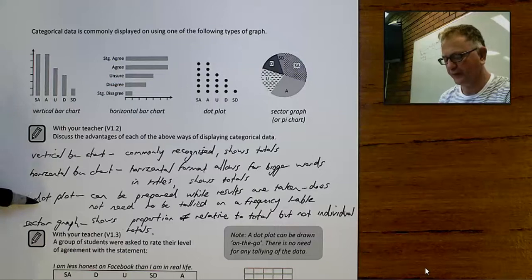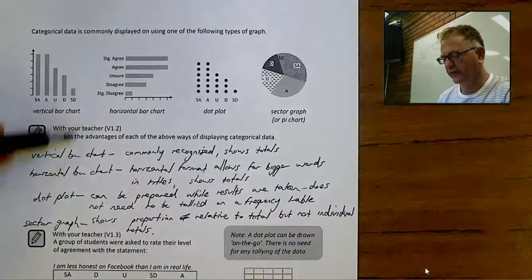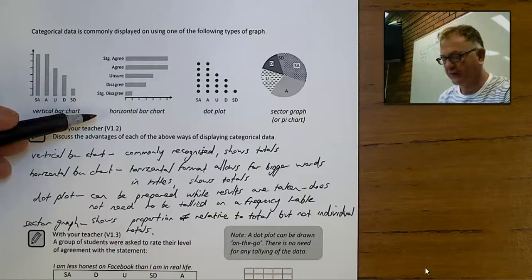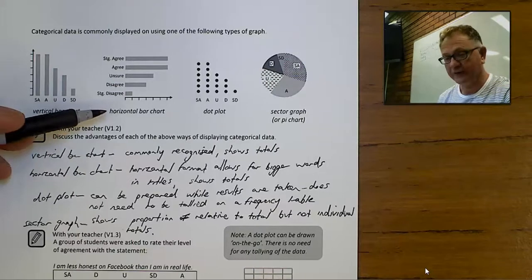Now a dot plot has the advantage that it can be prepared on the go. If you're doing a survey, you can prepare this graph even while you're going.